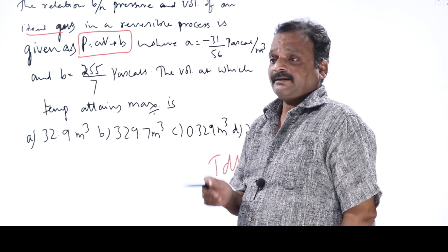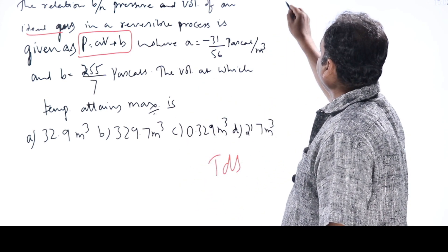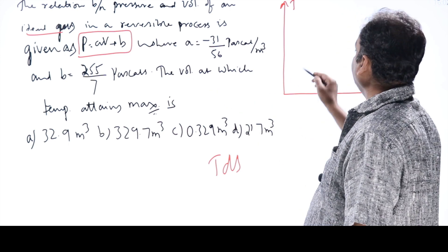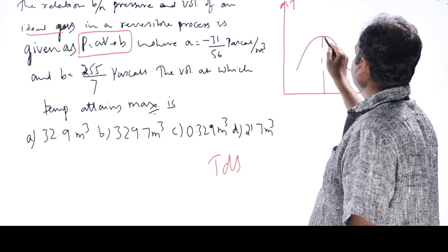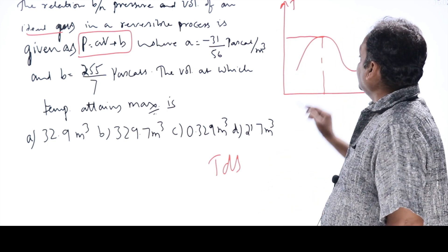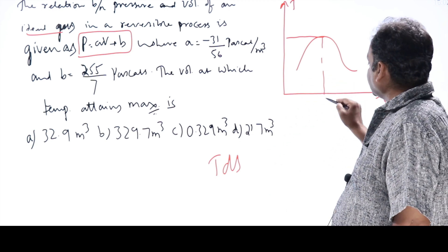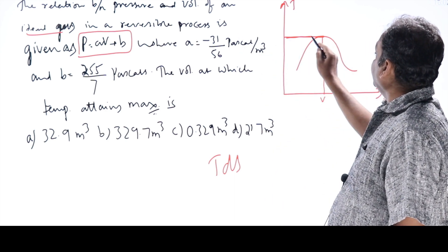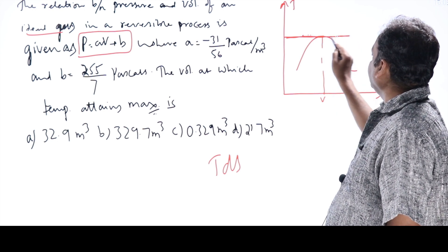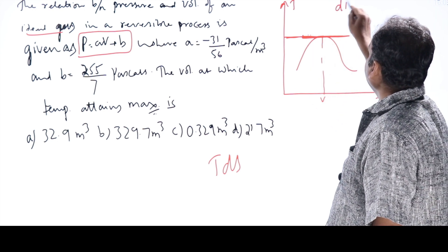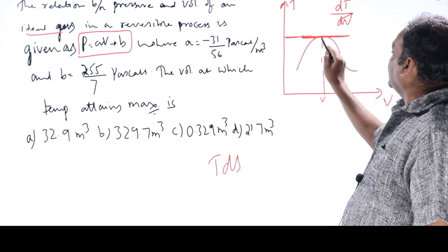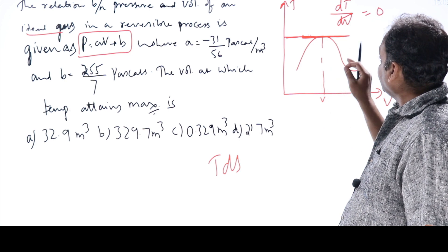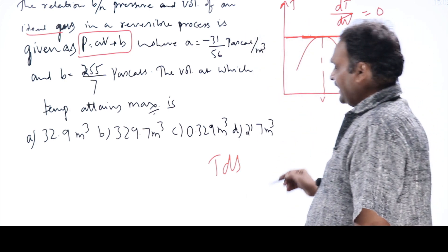The volume at which temperature becomes maximum — there should be some variation of temperature with volume. If we draw a graph of temperature versus volume, at some specific volume the temperature should reach a peak. At the maximum point, the slope of the curve — dT/dV — must equal zero. So we need to find the volume at which dT/dV = 0.